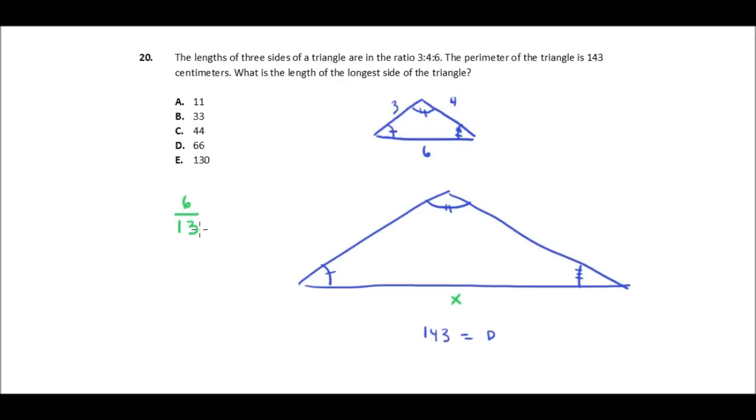So I know I've got 6 thirteenths, so part over whole. And I know that that's because I've got similar triangles, because this triangle has the same ratio of sides as this larger triangle. By the way, that's another definition of similar triangles, that the sides are in ratio to one another. So any two triangles with the same angle measures are always in ratio to one another in some combination of numbers.